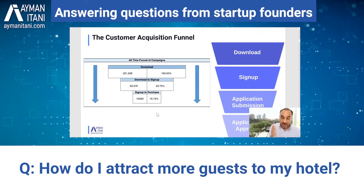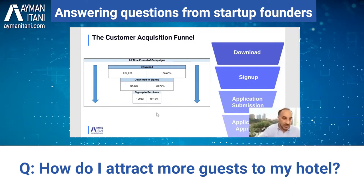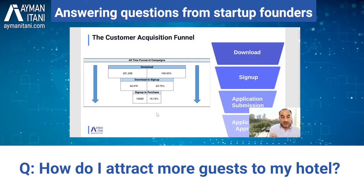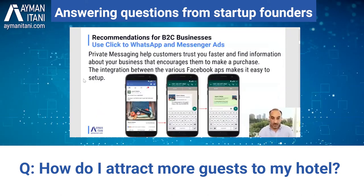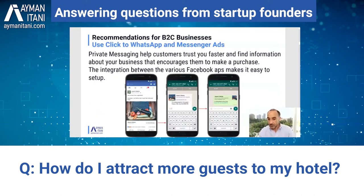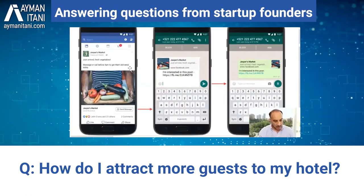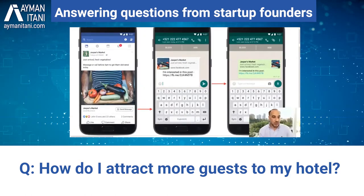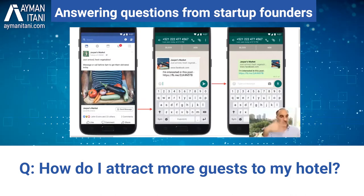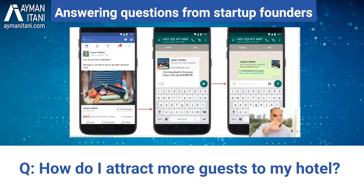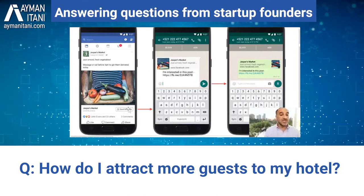One easy way to do this, Mohamed, is instead of running an ad that takes them straight to the website, run an ad with a call to action which is WhatsApp — and they're not expensive. It's an ad about the hotel with an image and so on. You'd say in it, for example, 'long holiday next week' or 'holiday staycation' — a very clear message, with a WhatsApp button.